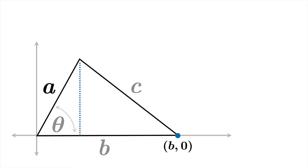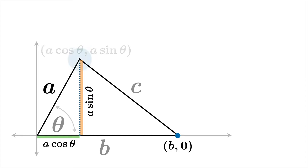More interesting and useful is the fact that this vertex has coordinates (b, 0). To find the coordinates of the third vertex, we drop an altitude and use a little right triangle trigonometry. This side is a cosine theta, this side is a sine theta, and therefore the coordinates of the third vertex are (a cosine theta, a sine theta).